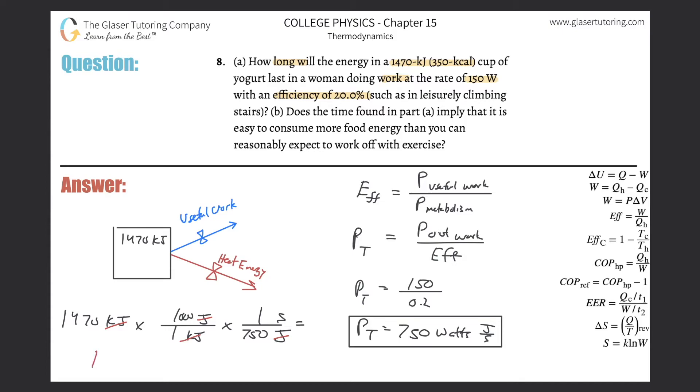Another way to have viewed this would be using the power equation: power equals energy per time. We found her rate of power consumption - 750 watts. The energy is 1470 kilojoules, but you need that in joules, so that's 1,470,000 joules divided by time. When you divide 1,470,000 by 750, it's the same - 1960 seconds.